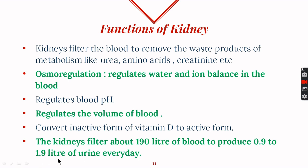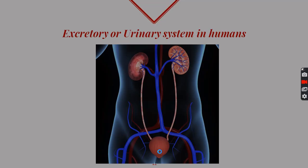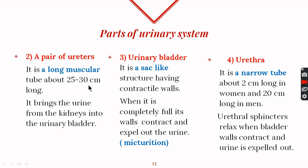Every day, kidneys filter about 190 liters of blood and produce 0.9 to 1.9 liters of urine. The pair of ureters are thin tubes about 25 to 30 centimeters long that bring urine from the kidneys to the urinary bladder. The urinary bladder is a sac-like structure with muscular contractile walls; when completely full, the walls contract and urine is expelled — this process is called micturition. Urine is expelled through the urethra, which is about 2 centimeters long in women and 20 centimeters long in men, controlled by urethral sphincter muscles.